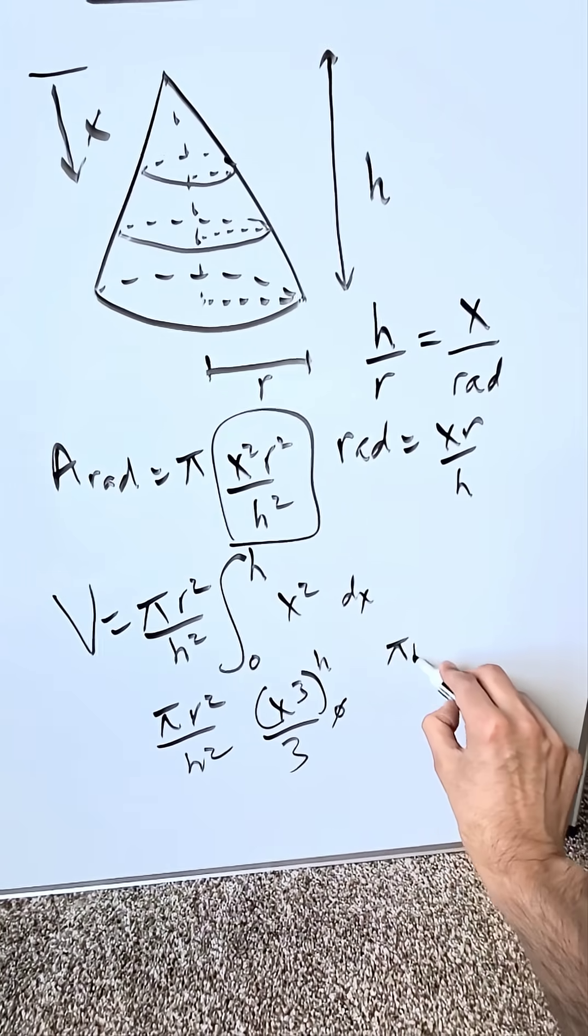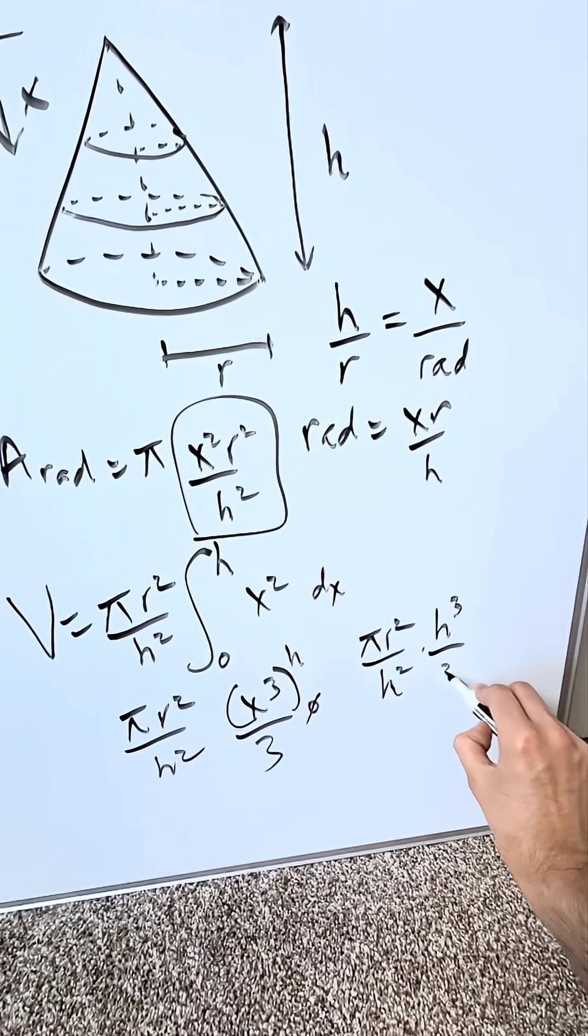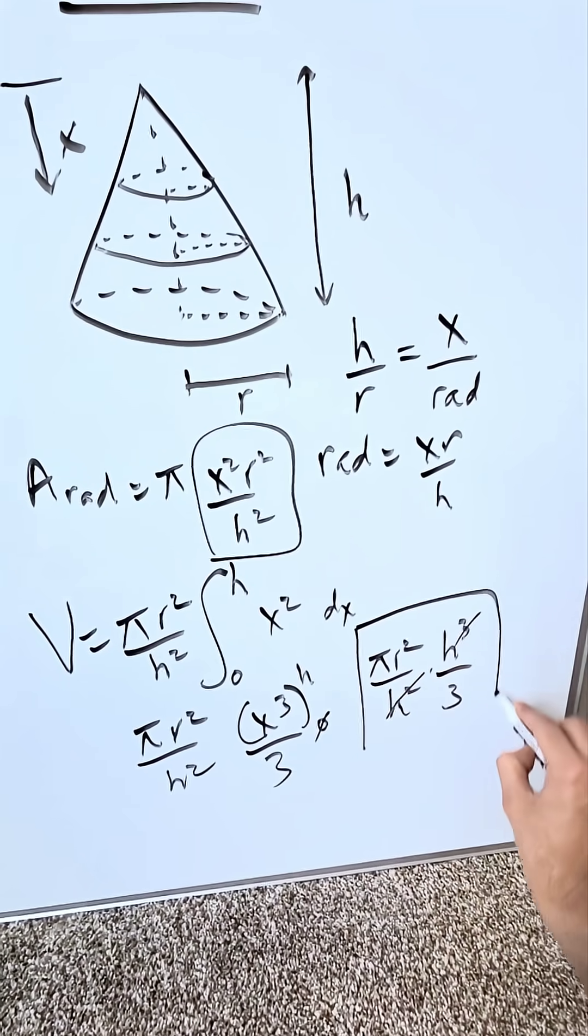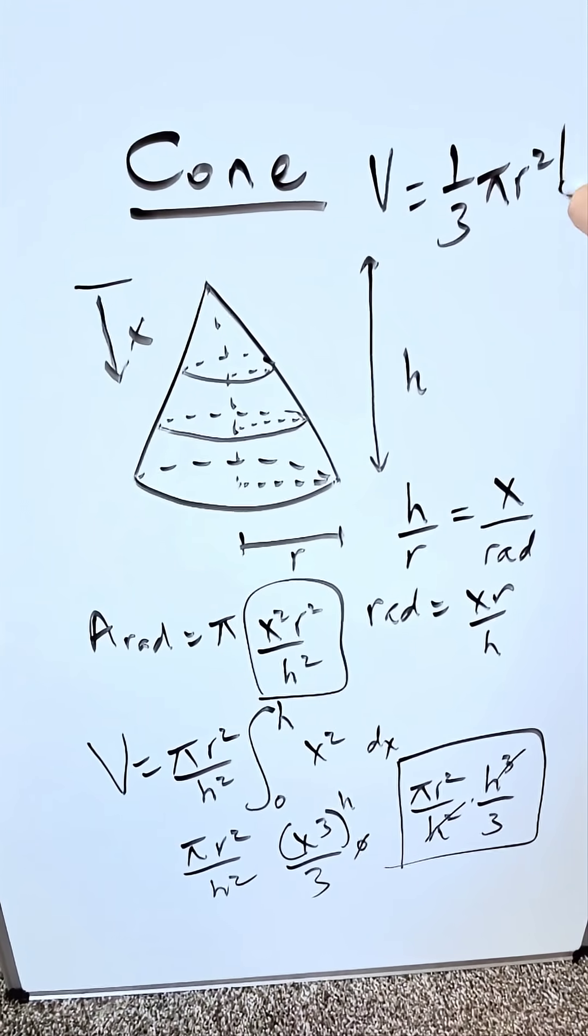When you compute this you have pi r square over h square times h cube over 3. When you clean this out the volume formula comes out. You have 1 over 3 pi r squared h and that's what we see for a cone. 1 over 3 pi r squared h.